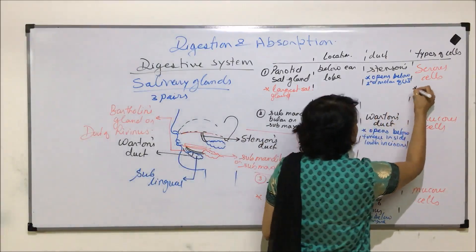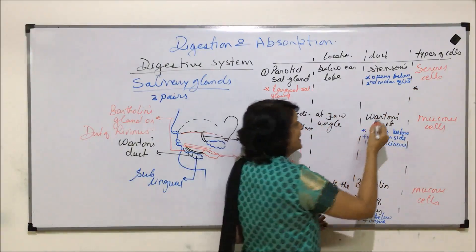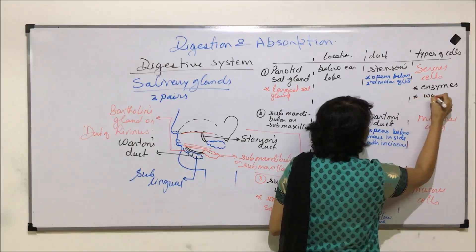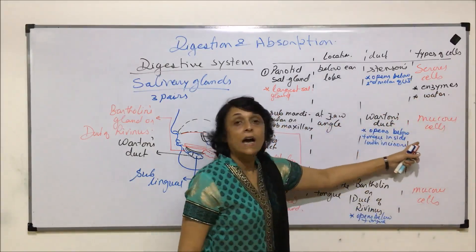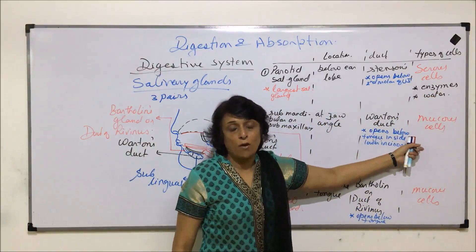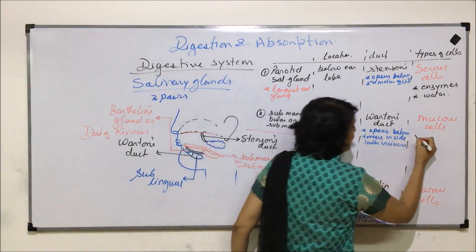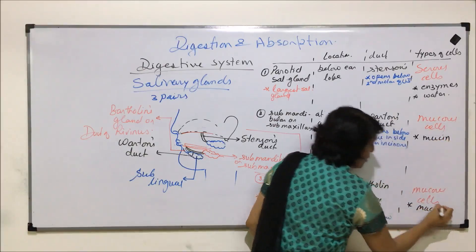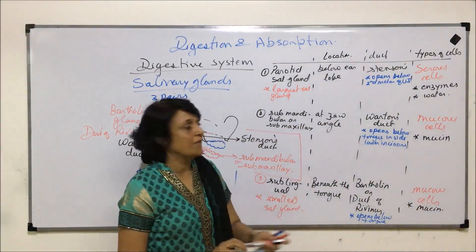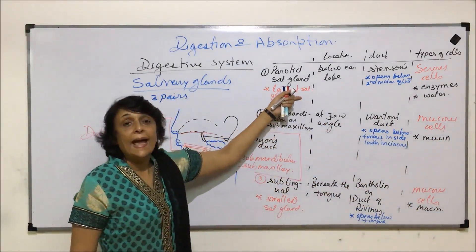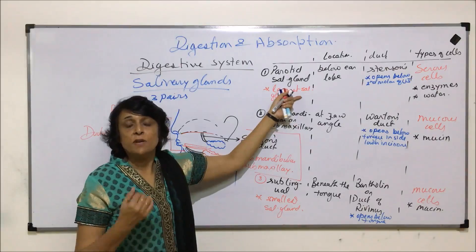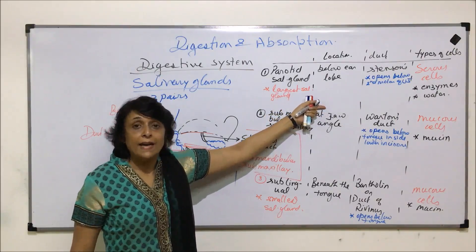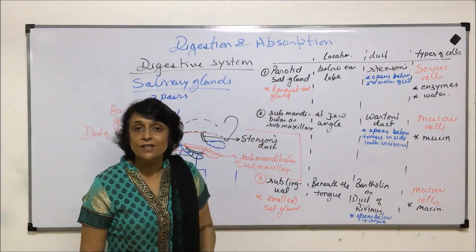The secretion of serous cells contains enzymes and mainly water. Mucus cells, as the name tells us, mainly secrete mucin — mucus is mostly secreted by these two glands. The enzyme content and watery content present in our saliva comes from the parotid salivary gland.